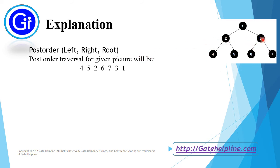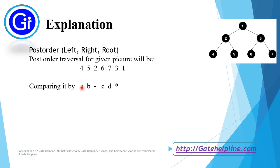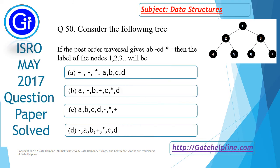The left subtree and right subtree for this node is visited, so now we will visit this. So the post-order traversal for the given picture will be 4, 5, 2, 6, 7, 3 and 1. Comparing it with the given expression in the question, which was A, B, minus, C, D, star, plus — the label of the nodes are this. According to the above discussion, the answer of the question is option A.